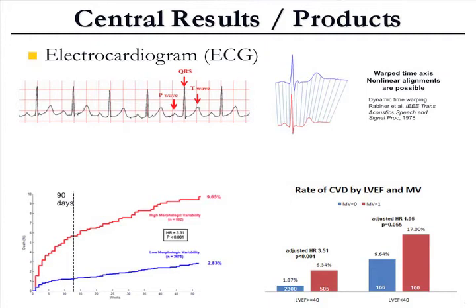We look at the electrocardiogram. The electrocardiogram encodes a lot of information about the patient — to have a normal electrocardiogram means your heart is normal, the conduction system is normal, and the interaction of the heart with the nervous system is normal. Our hypothesis is that small alterations from beat to beat tell you something — they encode information about the health of the cardiovascular system. We quantify differences between beats using dynamic time warping, and we've developed a measure called morphologic variability.